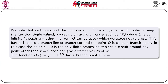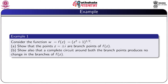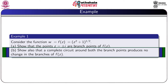Similarly, it can be shown that f(z) = (z−1)^(1/2) has a branch point at z = 1, and f(z) = (z+1)^(1/2) has a branch point at z = −1. We now consider an example: given the function w = f(z) = (z²+1)^(1/2), show that z = ±i are branch points of f(z), and that a complete circuit around both branch points produces no change in the branches of f(z).